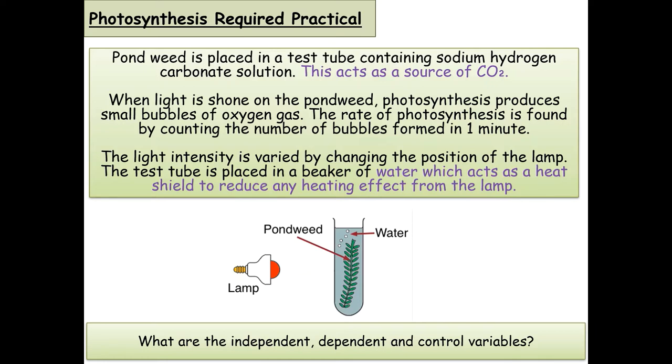Now, in terms of control variables, there were a couple that you could have had. You could have mentioned the temperature of the water. So in our case, we used a beaker of water in front of the plant and that allowed you to stop heat from interfering in the experiment because the beaker absorbed any thermal energy, but it did allow light to pass through. Another thing that you could have mentioned was the mass of the plant. So during the experiment, we use the same piece of plant each time for each repeat for each different distance. And that just keeps everything fair.